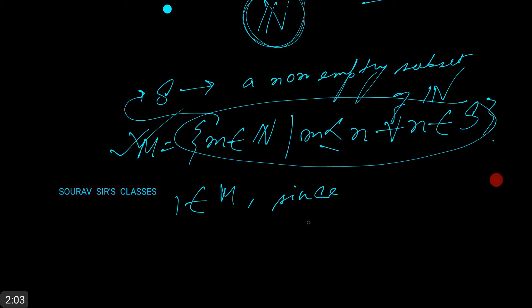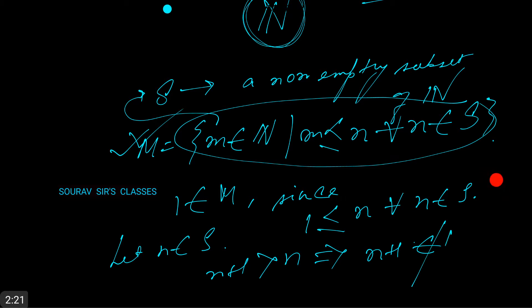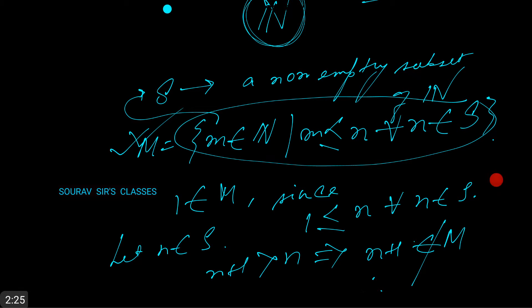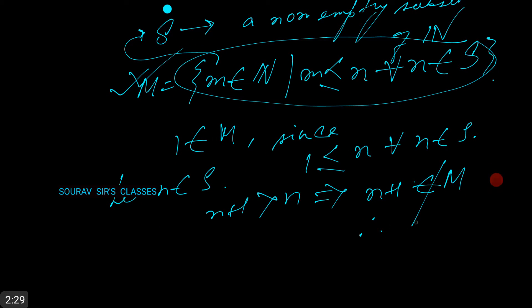Since 1 is less than or equal to n for all n belonging to S. Let n belong to S; then n plus 1 is greater than n, which implies n plus 1 does not belong to M, because m is not equal to n plus 1.